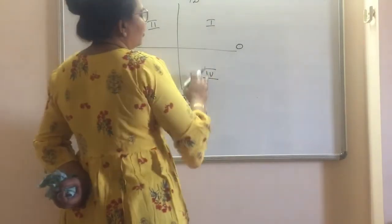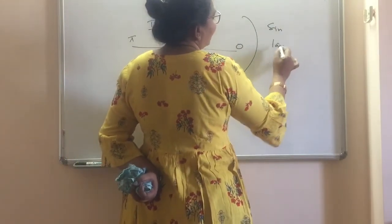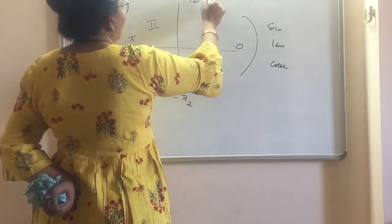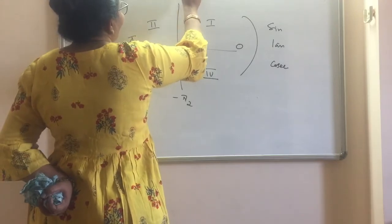So first quadrant and fourth quadrant is for sine, tan, and cosec. And first quadrant and second quadrant is for cos, sec, and cot.